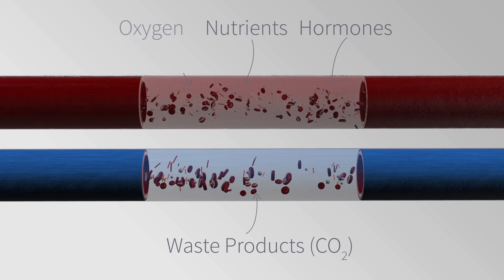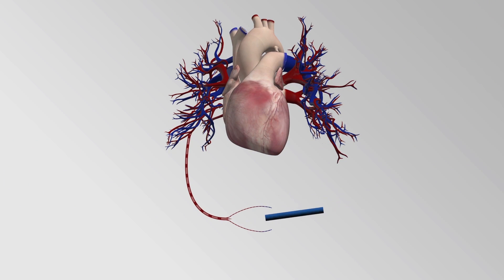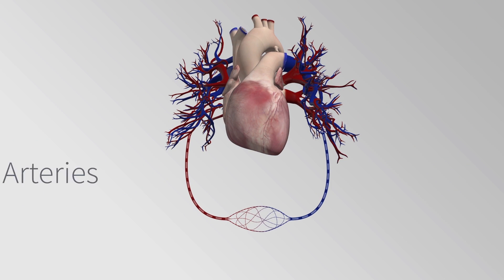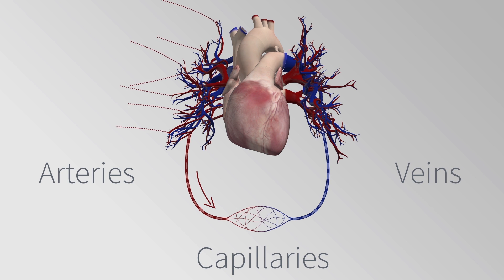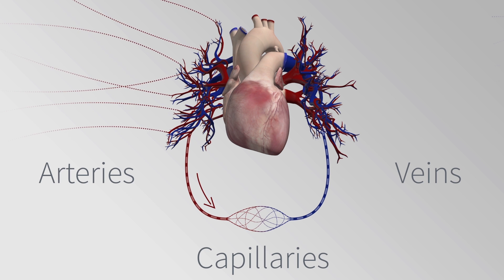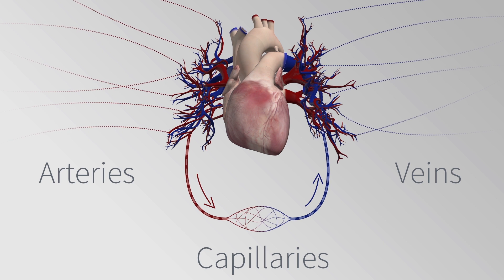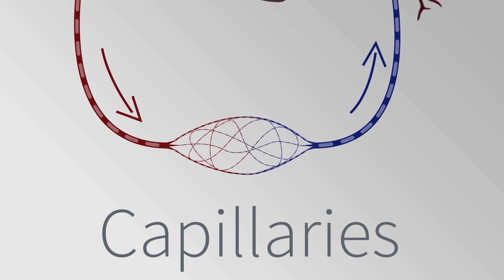Blood vessels can be separated into three groups: arteries, veins, and capillaries. Arteries carry blood away from the heart, veins carry blood towards the heart, and capillaries are microscopic thin-walled blood vessels which form a vast network connecting arteries and veins.